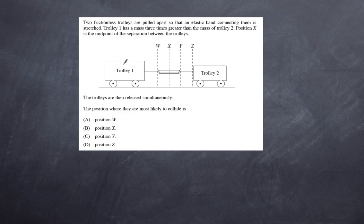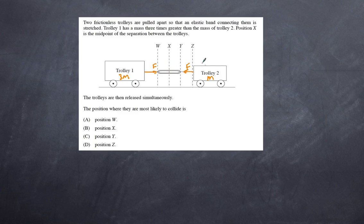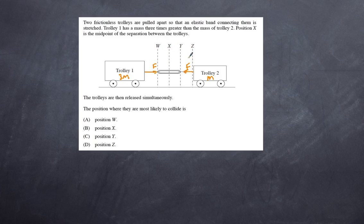Trolley 1 has mass 3m and trolley 2 has mass 1m, so trolley 1 is three times as heavy as trolley 2. When released, they move towards each other with exactly the same forces — that is Newton's third law. Since trolley 2 is lighter, its acceleration will be higher than trolley 1's. Trolley 2 will move a much greater distance than trolley 1, so Z and Y are definitely excluded. Is it X or W? Can we show this mathematically? We can.